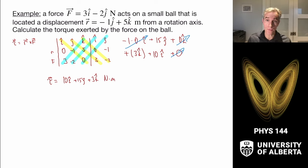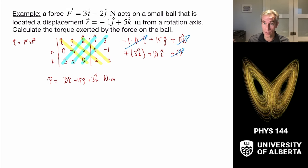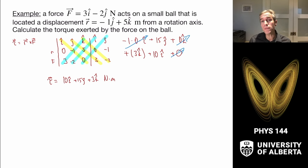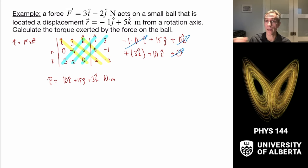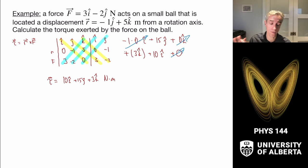If we need to calculate vector torques and we have unit vector components, we just calculate the cross product that way. We'll mostly rely on the RF sin(φ) construction and the right-hand rule, but it's good to know we can do this from arbitrary unit vectors.